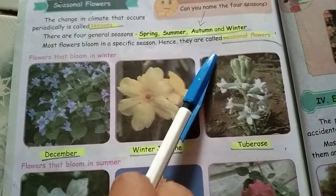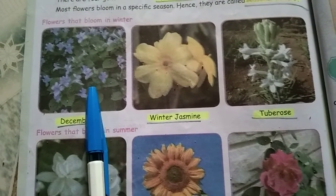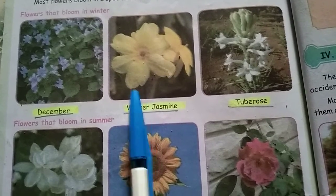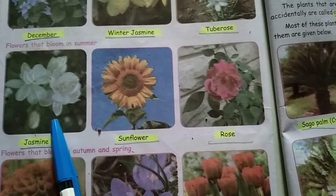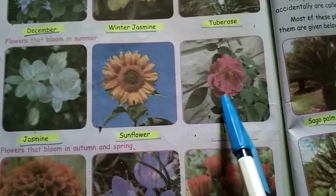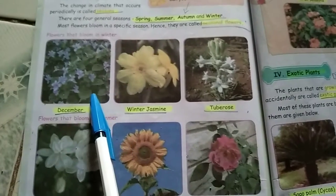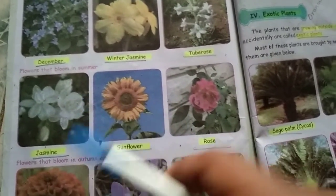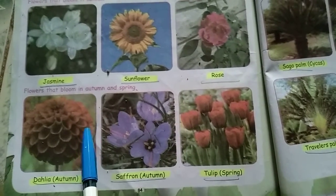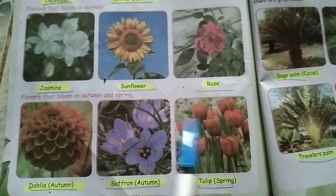This is a seasonal flower. There are four kinds of seasons — spring, summer, autumn, and winter — and depending on the season, different flowers bloom. For example, the December flower is purple or orange in color. Winter jasmine and tuberose are available in Tamil Nadu, along with jasmine and sunflowers and roses which blossom in summer. In autumn and spring, flowers like dahlia, saffron, and tulip blossom.